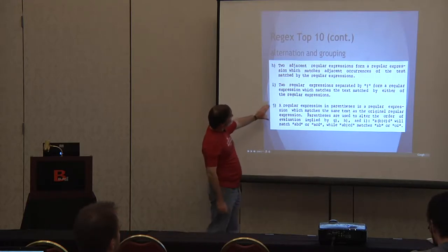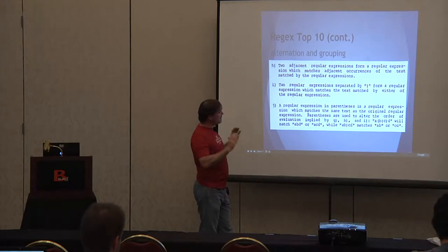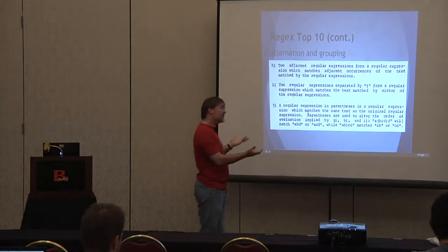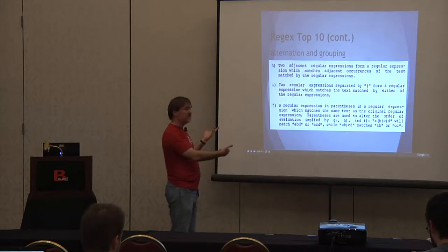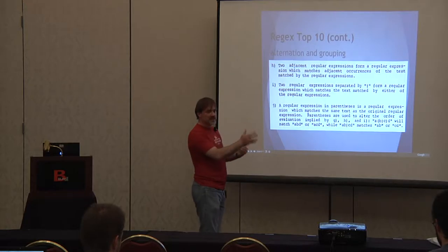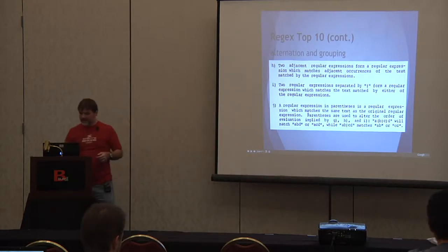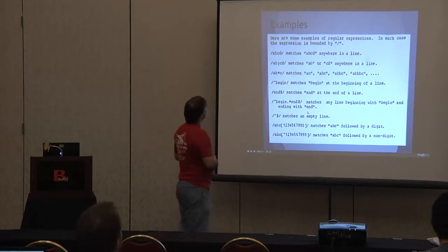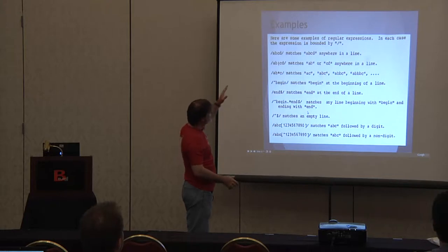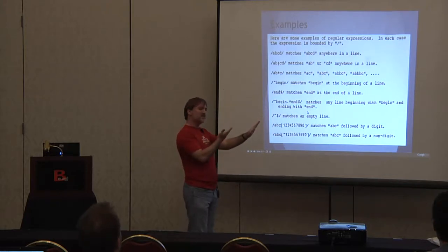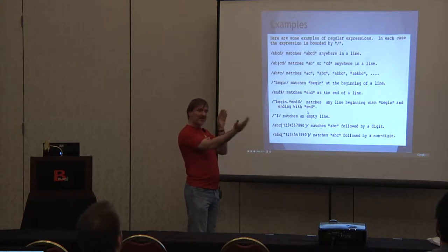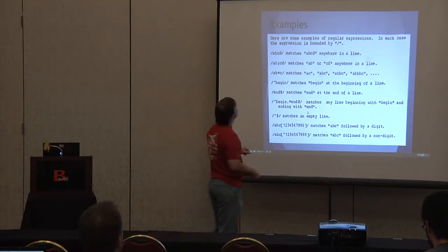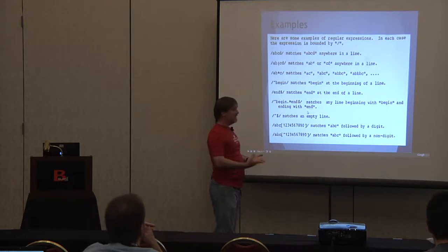Parentheses let you group things. Without the parentheses, A or B or C, D would be: A, B, or C, D. With the parentheses around B or C, it's: A followed by B or C, followed by D. And here from the very same paper are some examples. Slash A, B, C, D slash will match A, B, C, D anywhere in the target line. A, B-star, C matches A with no B's, one B, two B's, any number of B's.